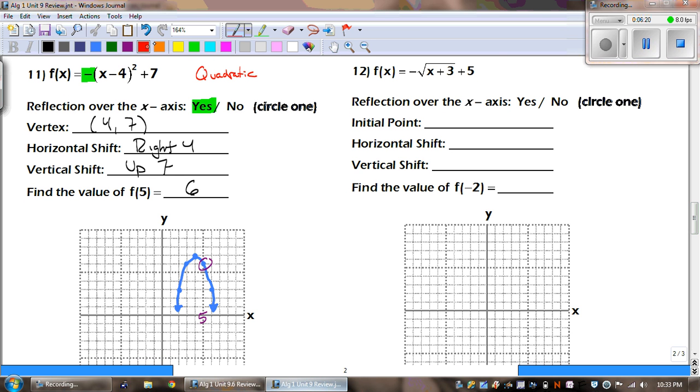Looks like they gave us another square root. Okay, so reflection, yes or no? Yes. What's our initial point? Well, the initial point would be negative 3, 5.